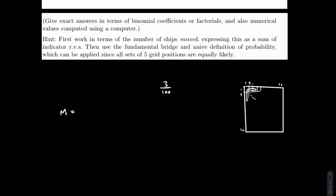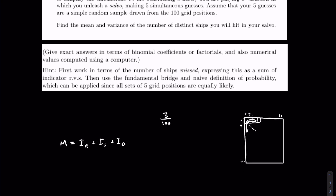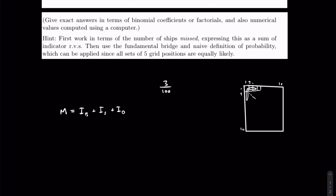We define a random variable M for the number of misses, and indicator variables for missing each ship: one for missing the battleship, one for missing the submarine, and one for missing the destroyer. We focus on misses rather than hits because with five simultaneous shots, focusing on hits would require enumerating all combinations — hitting one and missing four, hitting two and missing three, and so on. It's easier to focus on the complement.